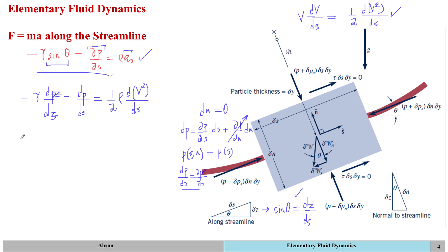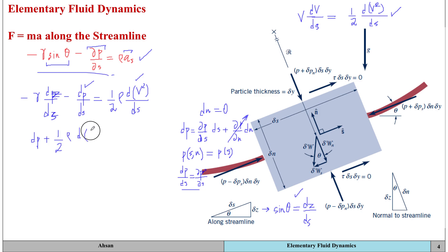We can eliminate ds throughout this equation, and we can bring terms to the left-hand side. Simplifying, we get dp plus one-half ρ dv² plus gamma dz equal to zero.